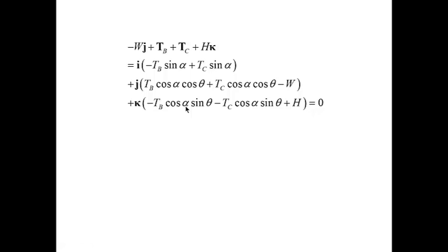So, now I have three equations for three unknowns: tb, tc, and h. I solve the first equation to determine that tb is equal to tc. Then, I substitute tb equal to tc to the second equation to determine their values. And, finally, I substitute the values of tb and tc into the last equation to determine h.